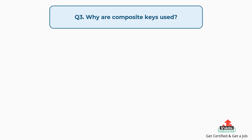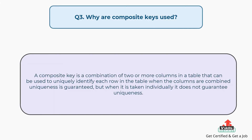Question number three: Why are composite keys used? A composite key is a combination of two or more columns in a table that can be used to uniquely identify each row in the table. When the columns are combined, uniqueness is guaranteed, but when taken individually, it does not guarantee uniqueness.